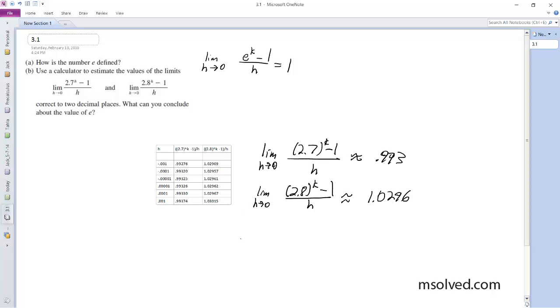And we can conclude that e lies on the interval between 2.7 and 2.8. And I know that the letter e, or the number e, is approximately equal to 2.718 and then a bunch of other decimals. So this is correct. All right.